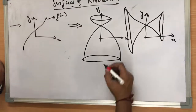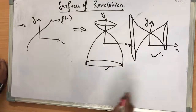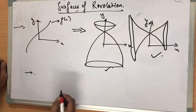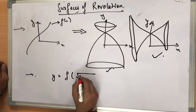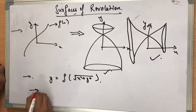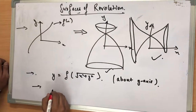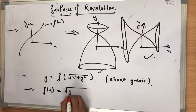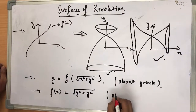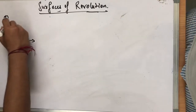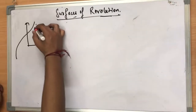The formula for rotation about the y-axis is: y = f(√(x² + z²)). For rotation about the x-axis, the formula is: x = f⁻¹(√(y² + z²)). Now let's see the explanation behind these equations. I have a curve y = f(x) which has been rotated about the y-axis.